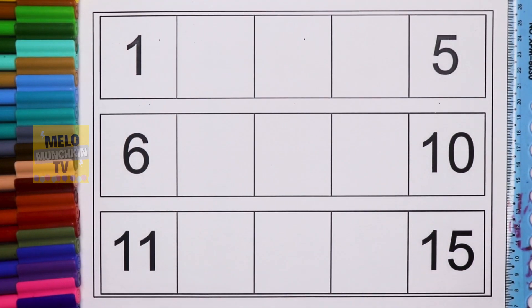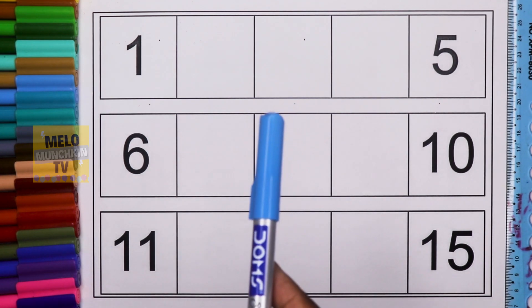Hello kids, today we'll learn numbers between 1 to 5, 6 to 10, and 11 to 15. We need to fill the missing numbers. Okay, so let's get started. So first I'll take blue color to fill the first line.